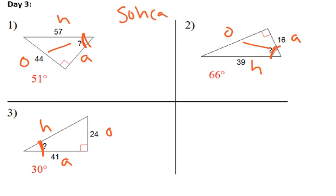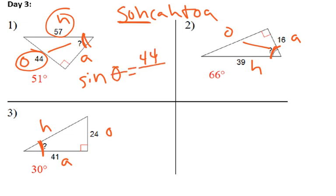And using the SOH CAH TOA, decide which one we set up. So, opposite and hypotenuse, that's sine. So we set it up, the sine of our angle theta is equal to the opposite over the hypotenuse.